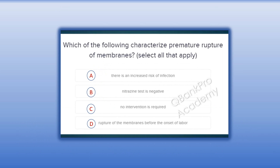Which of the following characterize premature rupture of membranes? Select all that apply. A. There is an increased risk of infection. B. Nitrazine test is negative. C. No intervention is required. D. Rupture of the membranes before the onset of labor.